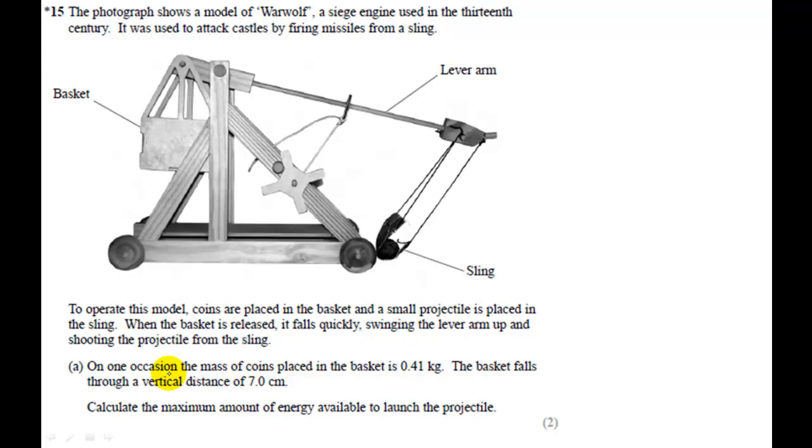Right, so it's telling us here, on one occasion the mass of the coins placed in the basket is 0.41 kilograms. The basket falls through a distance of 7 centimeters. Calculate the maximum amount of energy available for launch of the projectile.